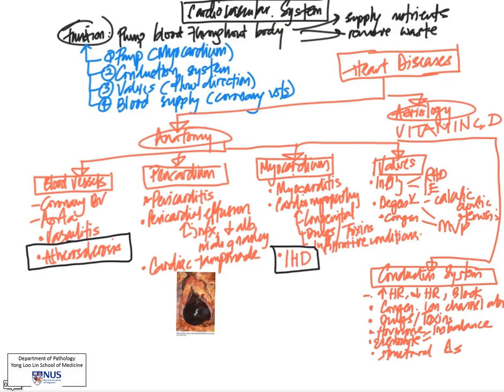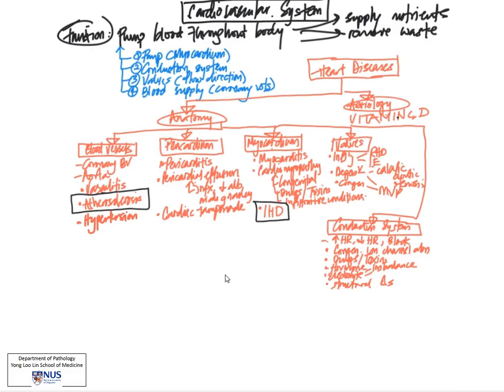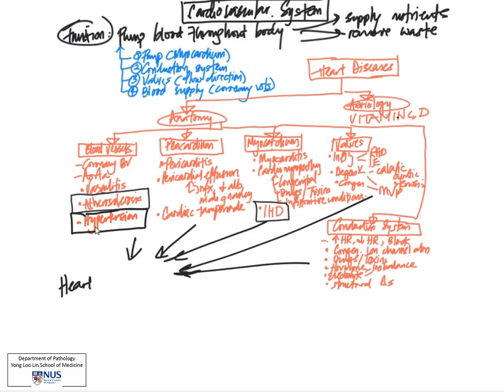I've highlighted here some of the important conditions: atherosclerosis, ischemic heart disease, and hypertension. These we will talk about more in depth in different mind maps, and also not to forget the end stage of many of the cardiovascular diseases which is heart failure. Any of these diseases can contribute either singly or together to heart failure and we'll talk more about that later.